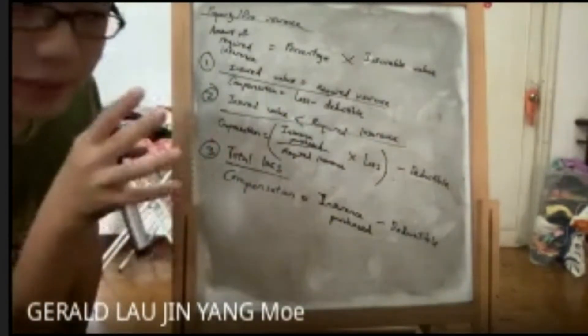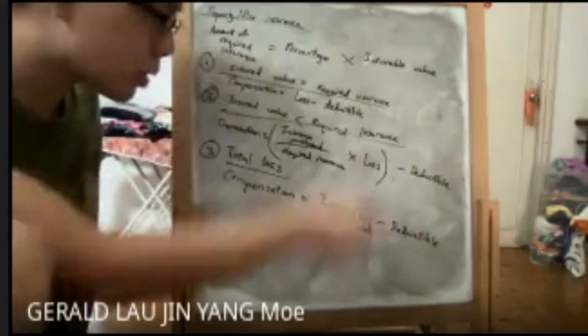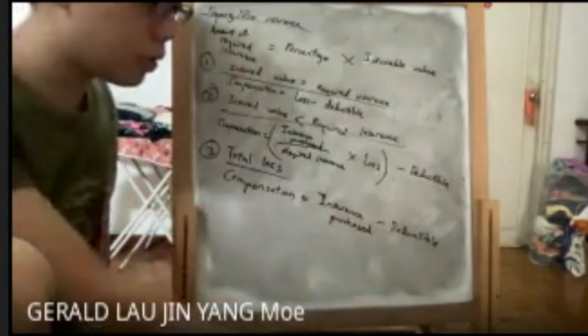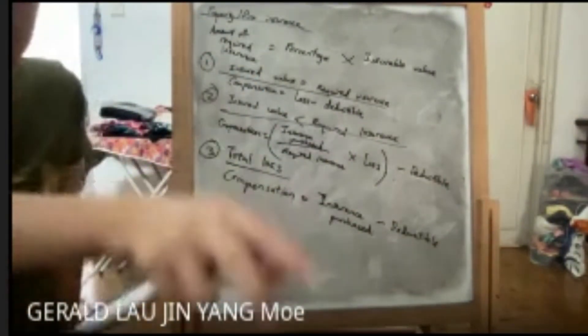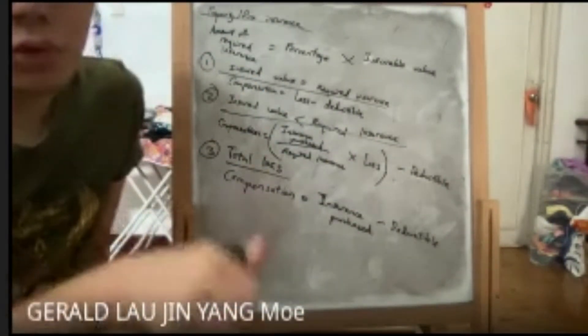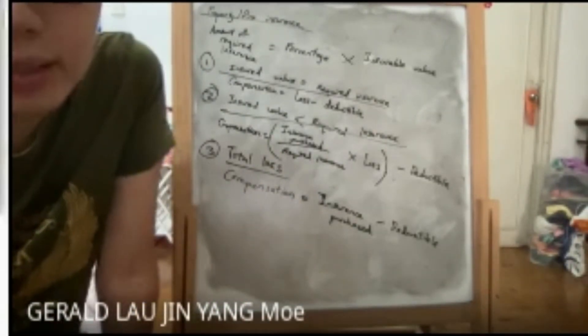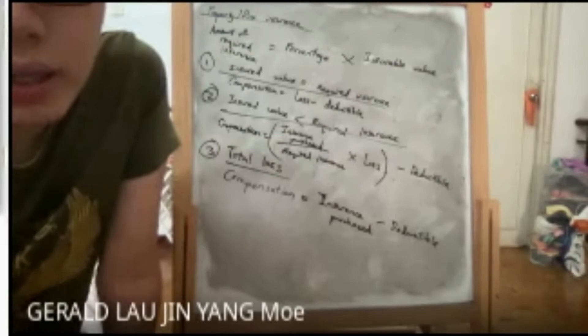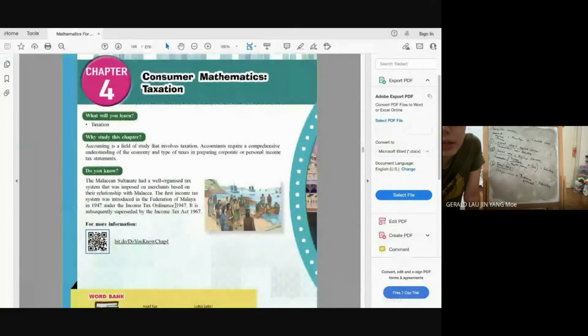Now we move to Chapter 4: Taxation. Taxation will be easier because there are fewer formulas — it's mostly percentage times amount. Taxation is a process of revenue collection from individuals or companies for the use of the country. The government collects taxes to develop the country and the economy. If you avoid tax, you can go to jail.